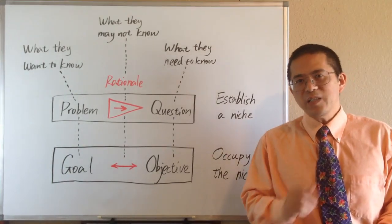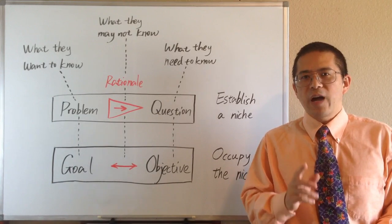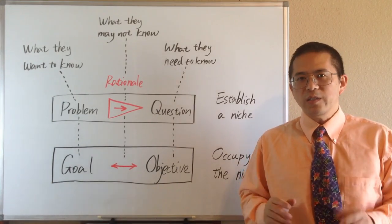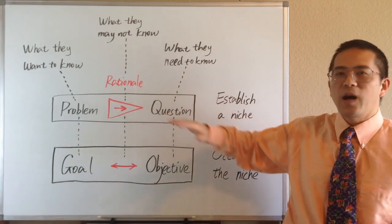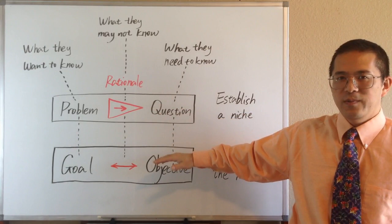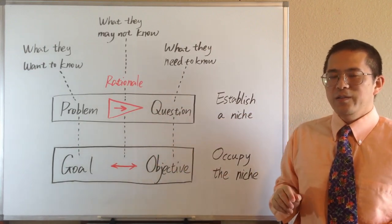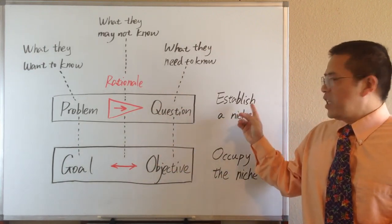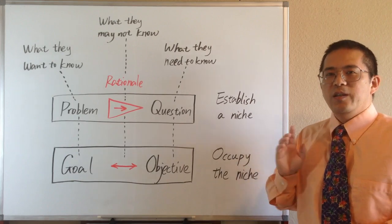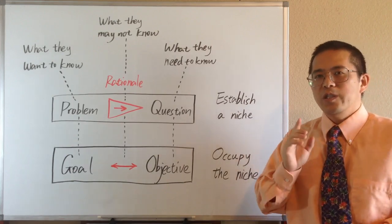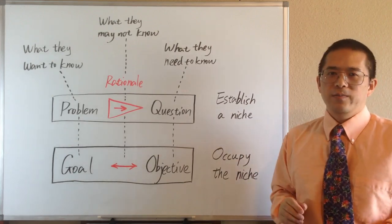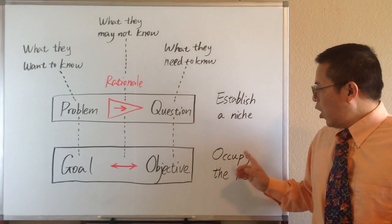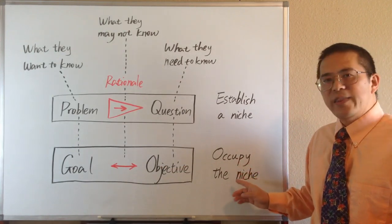An effective writing model is to divide the whole introduction section into two parts. In the first part, we establish a niche in the research territory. In the second part, we occupy that niche.